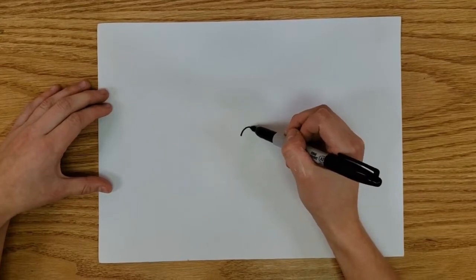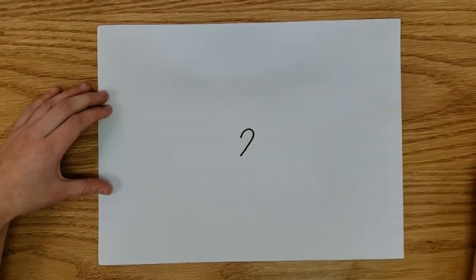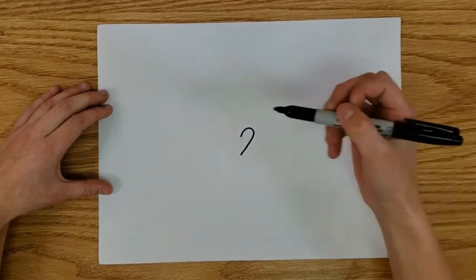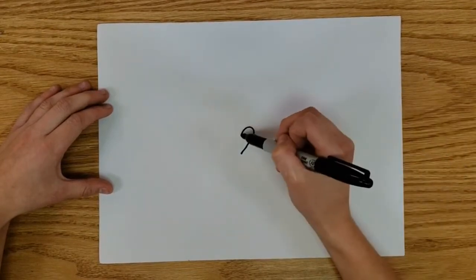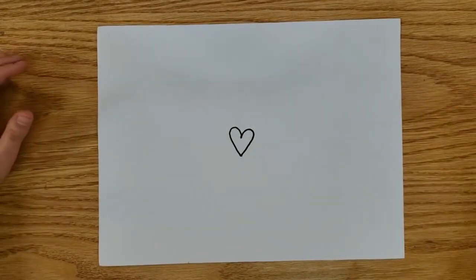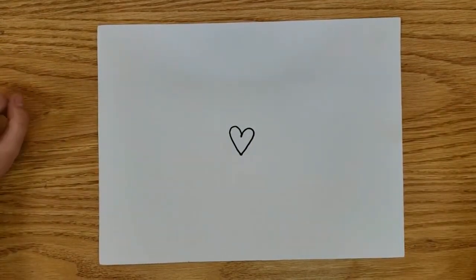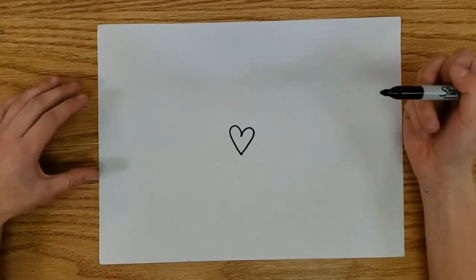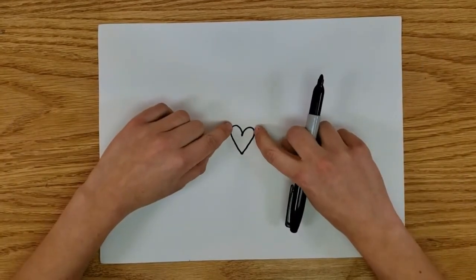Alright, here we go. In the very center of your paper, you're going to start by drawing a basic heart. If you're not sure how to draw a heart, here's how you can do it. I find my center and I'm going to hook up, around, down, just like that. Now we do the same but going the opposite direction: up, around, down, and we're connecting those two points. Not too bad.